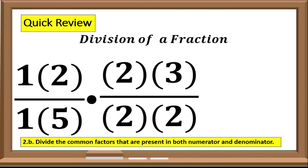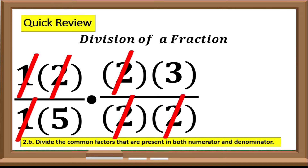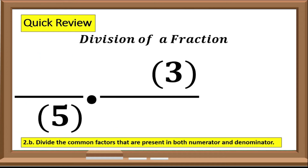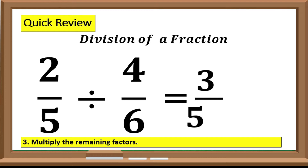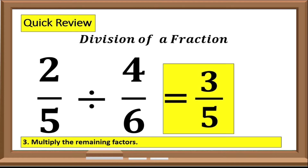So we have 1, 2, and another 2 — we can cancel them out, or simply we just divide them. Next, multiply the remaining factors. In the numerator, the remaining number is 3, and for the denominator we have 5. So the quotient of 2 over 5 divided by 4 over 6 is equal to 3 over 5. Let us try more examples.